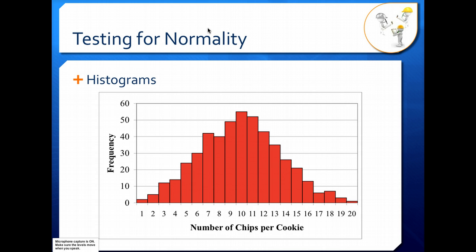Here's a histogram. Histograms give you a way to visually analyze your data and see — does it look like the bell curve shape, that normal shape, or is it a different shape? If we look at this graph, yes, it is normally distributed. We have a nice bell curve shape here. Everything is good. Our assumption of normality is fine and we can go ahead with our analysis.